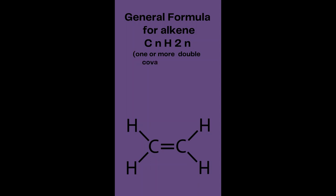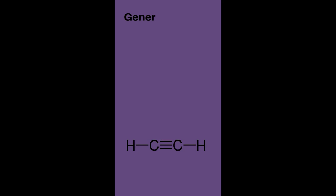Unsaturated hydrocarbons contain carbon-carbon double or triple bonds. General formula for alkene: C n H 2n, one or more double covalent bonds present. Example: ethene C2H4.